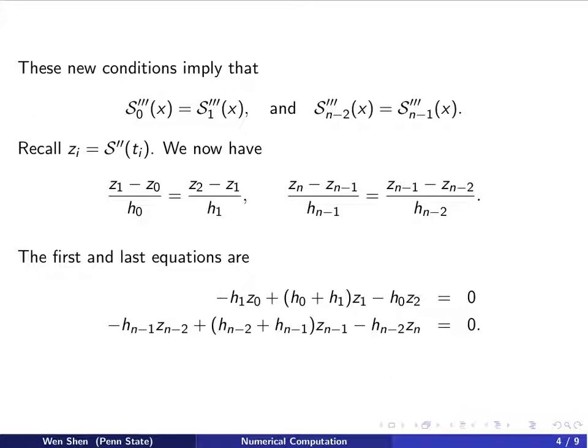So rewrite this one, arranging it in order of the indexes z_0, z_1, and z_2, and multiply by h_0 times h_1, and write it like that. Everything on the left-hand side, we get this linear equation. And the similar thing for this equation gives us another linear equation containing z_{n-2}, z_{n-1}, and z_n as the unknown.